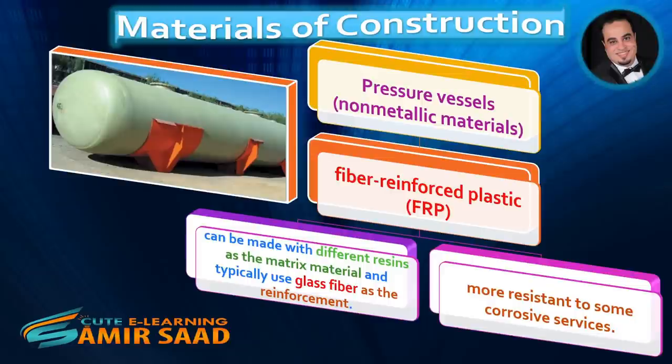Pressure vessels constructed out of non-metallic materials are usually made from fiber-reinforced plastic (FRP). FRP can be made with different resins as the matrix material and typically uses glass fiber as the reinforcement. FRP can be more resistant to some corrosive services.